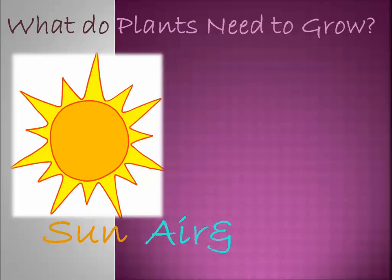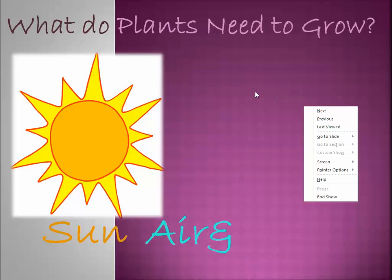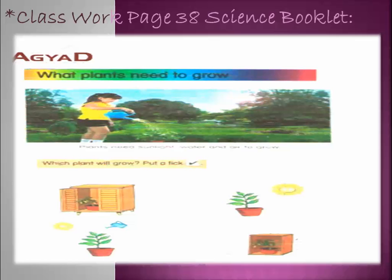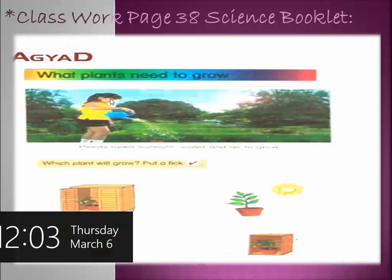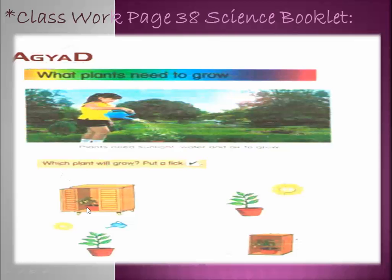Now KG1, open your science booklets on page 38 — we are going to do an exercise together. Which part of the plant will grow? Put a tick. Let's look at the first picture: the plant is in the cupboard, so it's not exposed to sunlight, so it will not grow.